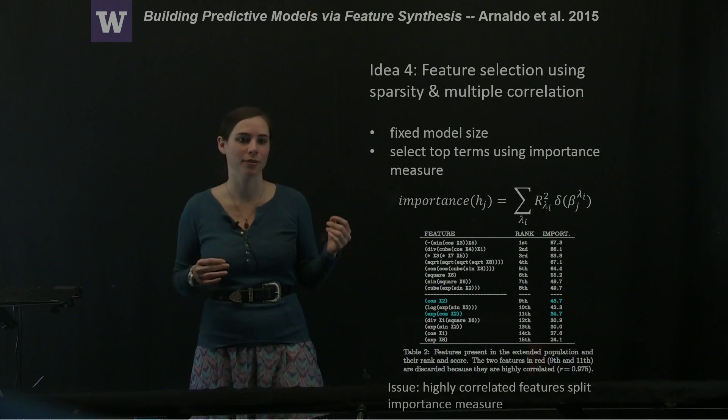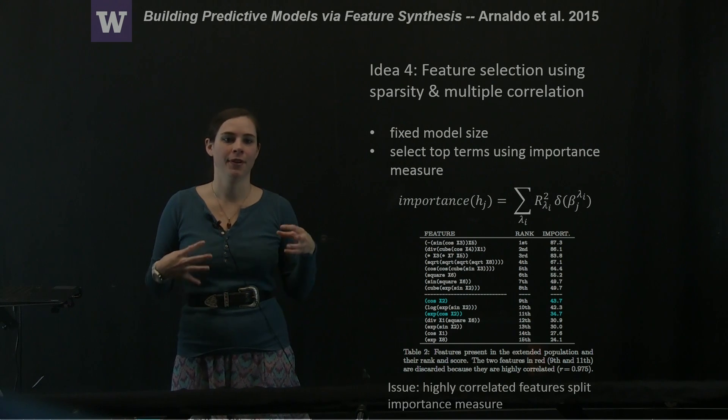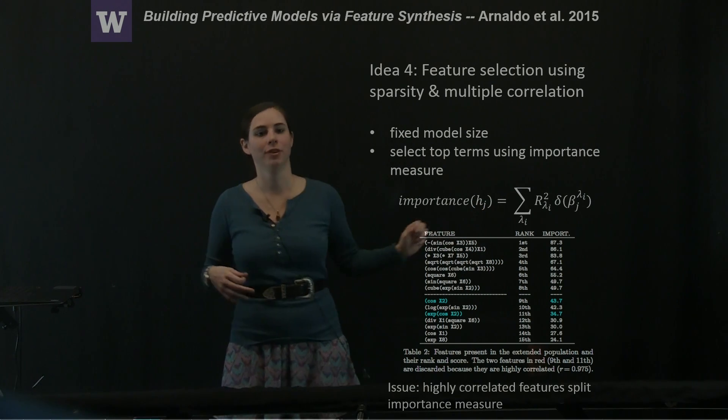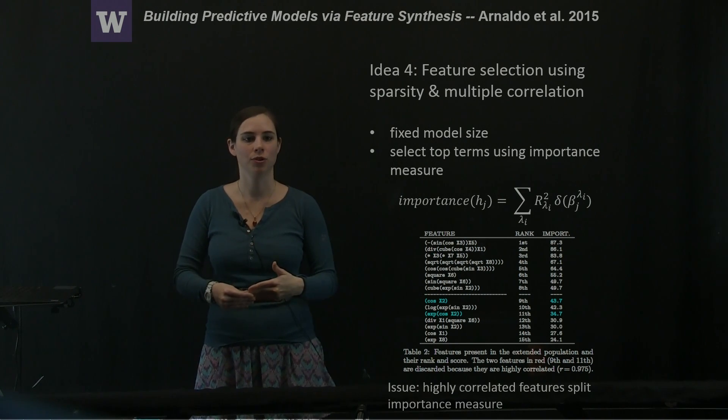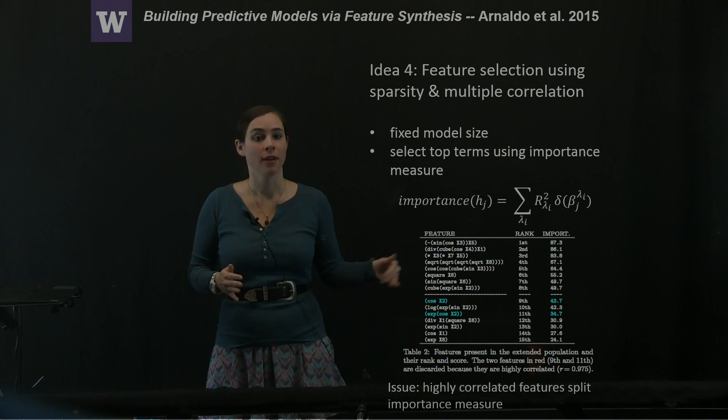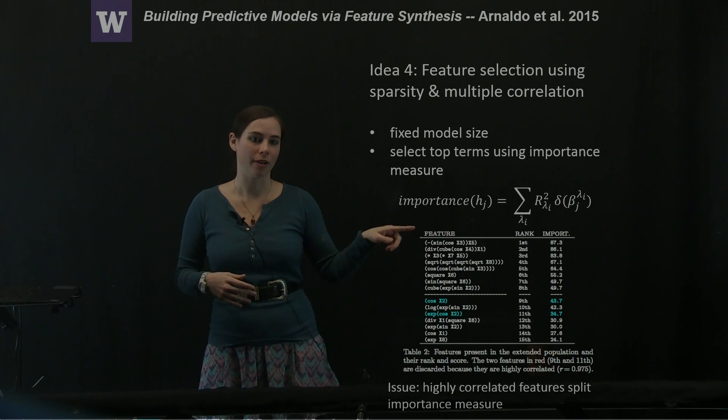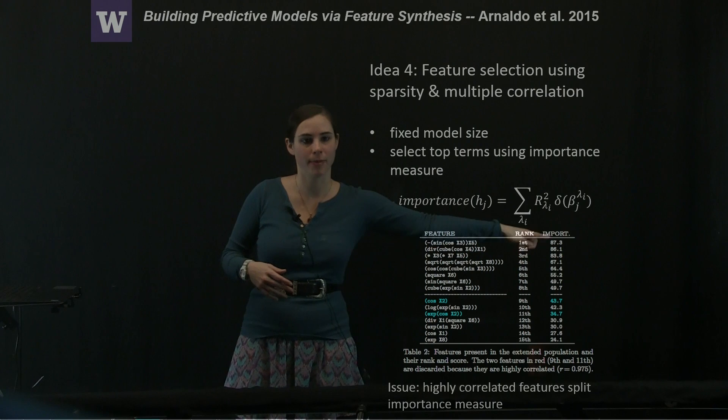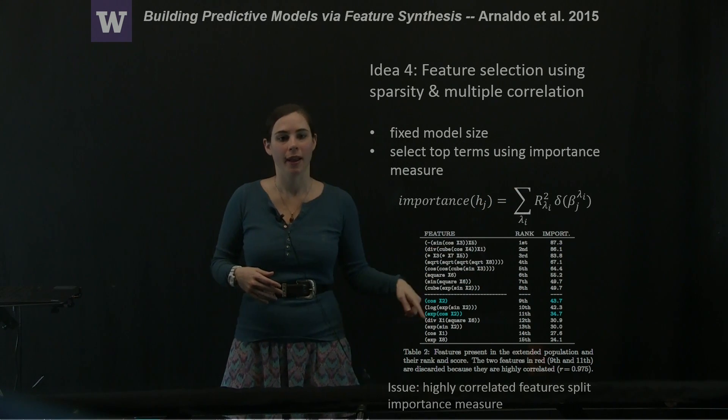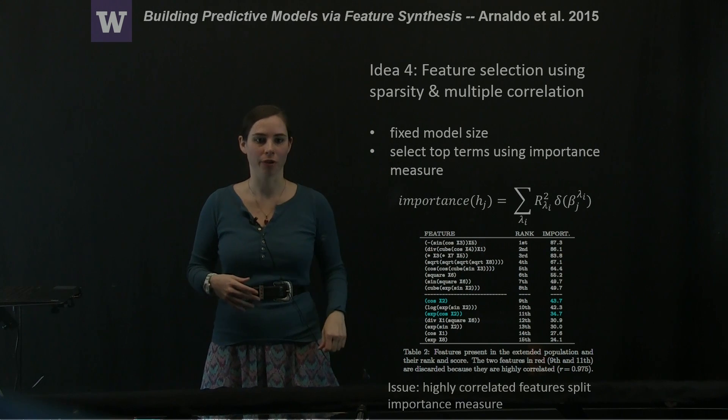So this allows, basically what this is saying is if feature h contributes greatly to a good fit for that model over all lambda values, then that feature is going to be ranked very highly. You have some list of features with some rank based on this importance measure, and then you just apply some cutoff given the fixed model size.